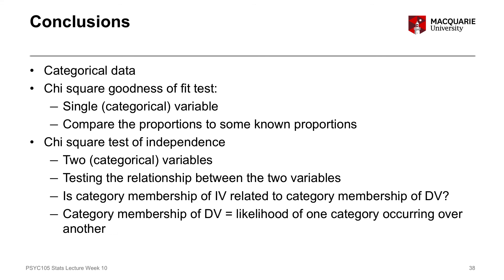The chi-square test of independence looks at the association or relationship between two categorical variables — whether category membership of an independent variable is related to category membership of a dependent variable. Category membership of the dependent variable can be expressed as the likelihood of one category occurring compared to another, such as the likelihood of getting the bonus compared to not getting the bonus across reminder conditions. This is the last new statistical test we're learning this semester — congratulations on getting through all of them.